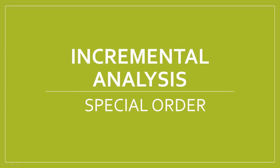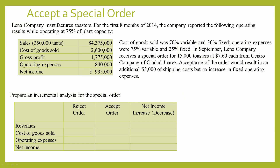In this video, I'm going to cover a basic example of incremental analysis for a special order. Let's look at our example. Leno Company manufactures toasters. For the first 8 months of 2014, the company reported the following operating results while operating at 75% of plant capacity.